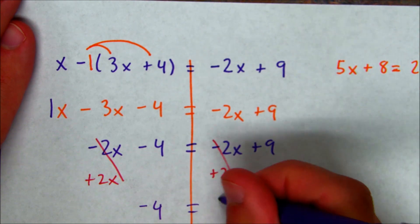So like we saw before, we're going to undo this minus 2x with a plus. And they both cancel. So what I get here is negative 4 equals 9. Since negative 4 will never equal 9, this problem has no solution. So hopefully you got that one right.